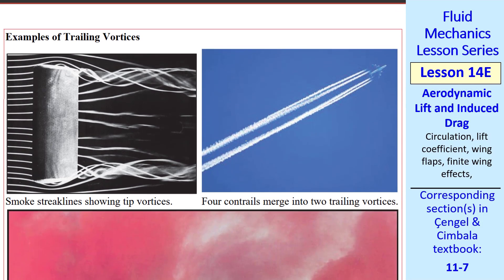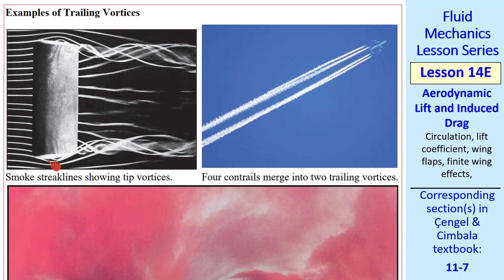Here are some examples of trailing vortices. You can see how these streak lines wrap around each other and form these tip vortices. Here's an example of contrails, as I mentioned. You actually get condensation from the engines.